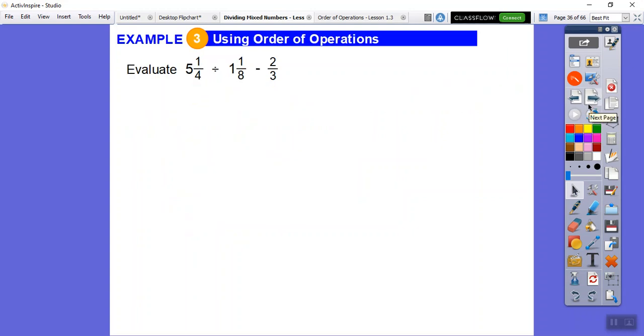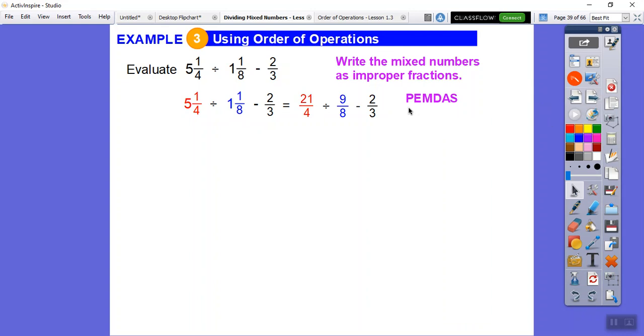So here we go. We're going to use order of operations. So remember, please excuse my dear Aunt Sally. Let's change them to improper fractions first. 4 times 5 is 20, 20 plus 1 is 21. So this will become 21 fourths. 1 times 8 is 8 plus 1 is 9. So this will become 9 eighths. And then now we're going to do PEMDAS. Parentheses first. There's no parentheses. Exponents second. There's no exponents. We do multiplying or division third. And there's a division sign. So we have to do this guy first before we can subtract the two thirds.